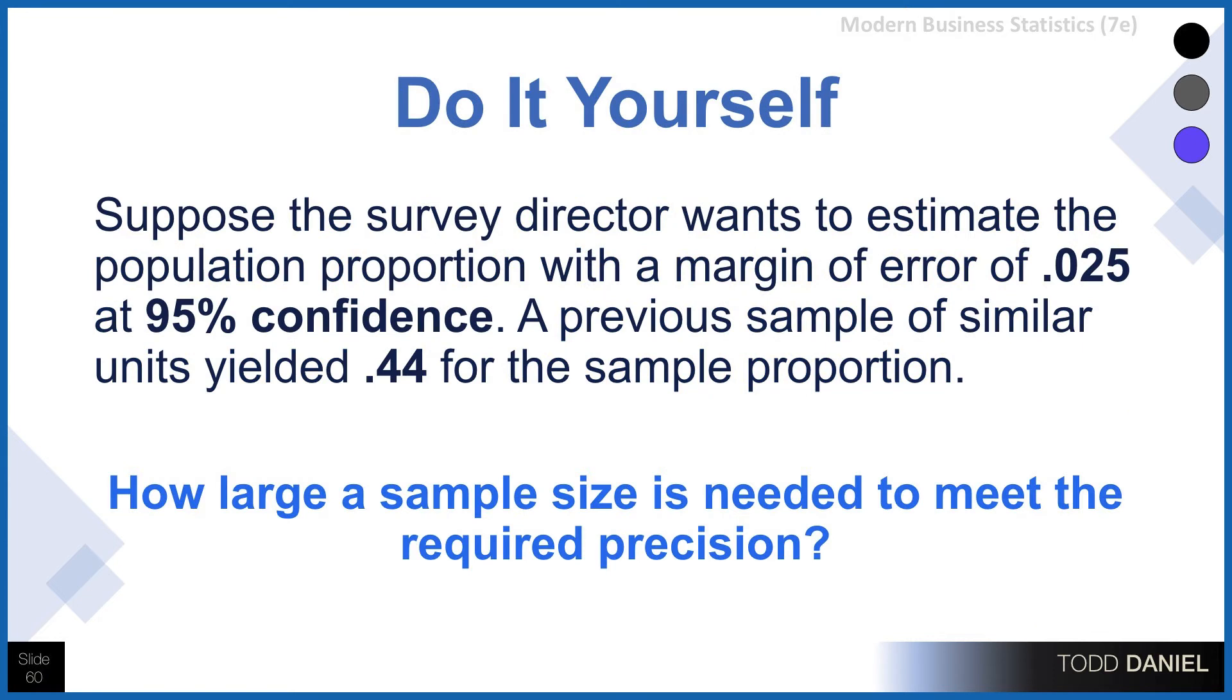Let's do this ourselves. Now we have a question involving a proportion with a margin of error of .025 at a 95% confidence level. A previous sample of similar units yield a .44 for the sample proportion. How large of a sample size is needed to meet this required precision?